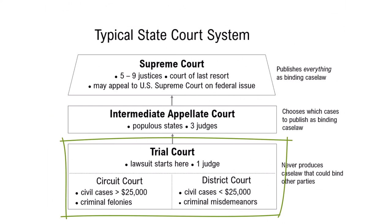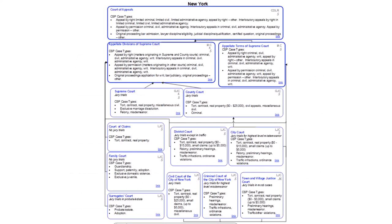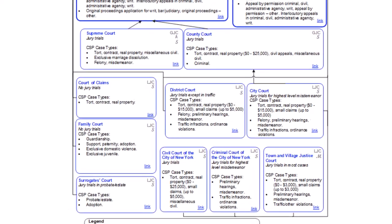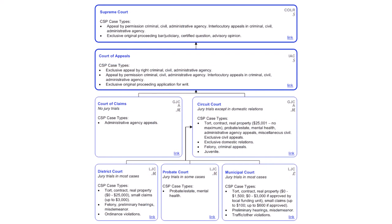Is this a little more complicated than what you see in a typical system? Not really. Compare it to New York — in New York these are all of the trial courts at the lowest level and you can see it's quite a bit more complicated there. So we'll go back to Michigan.